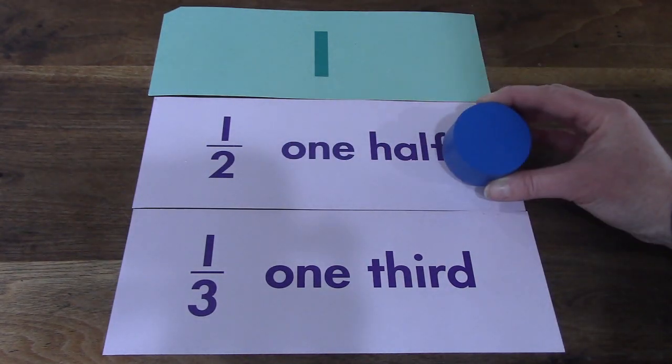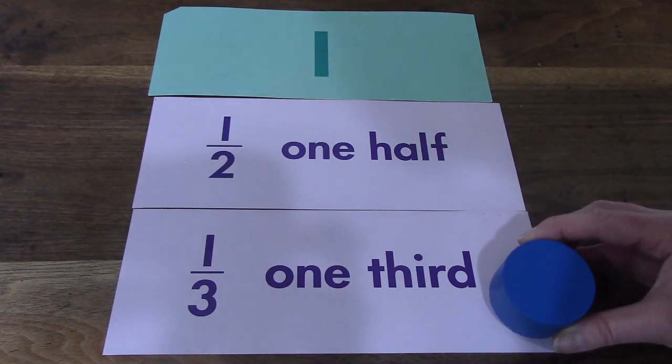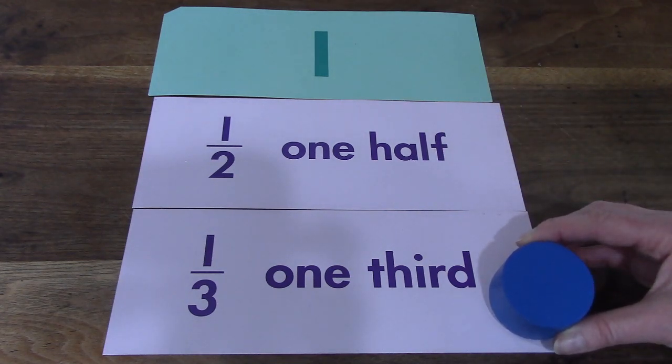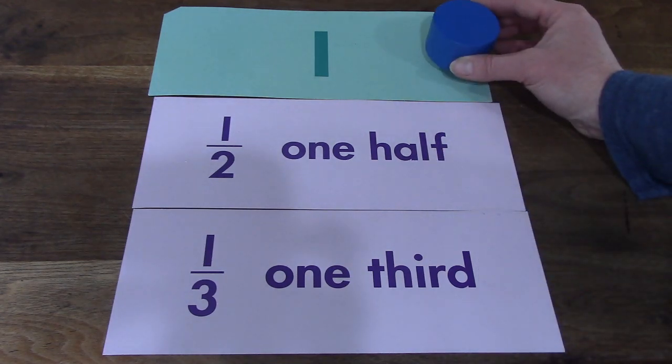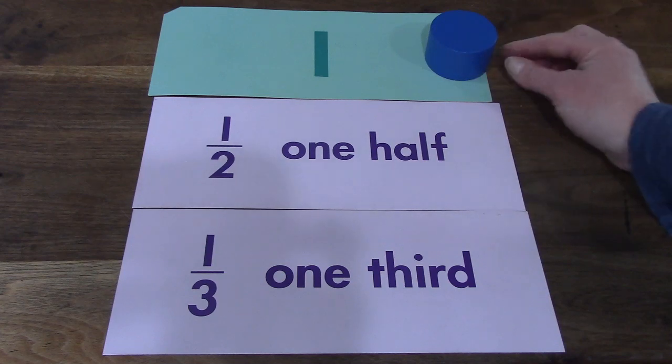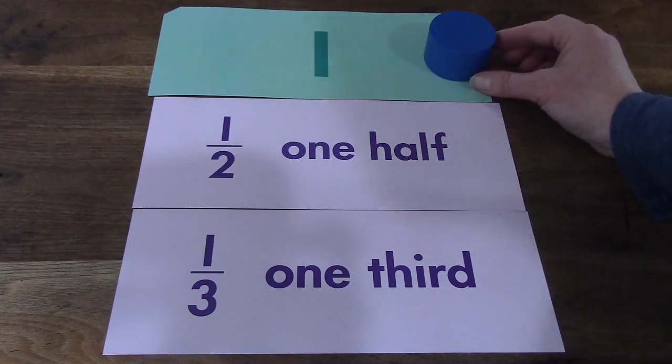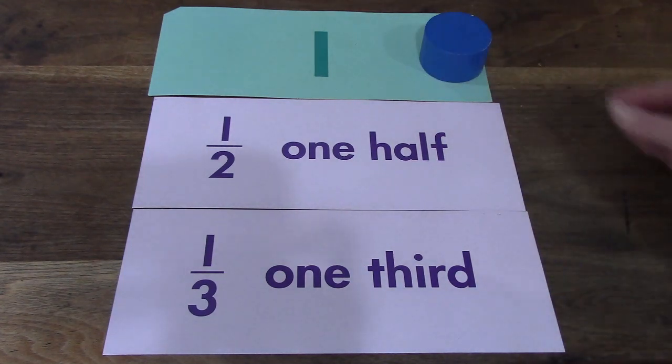Is it half of a circle, or is it one-third of a circle? You're right. It is one circle.